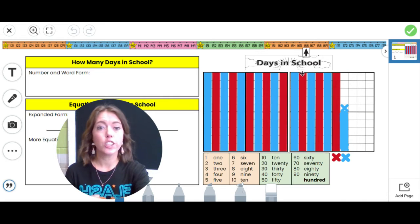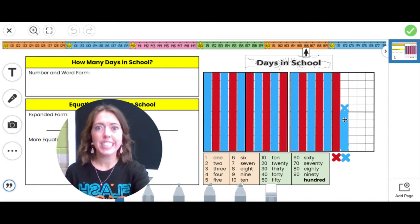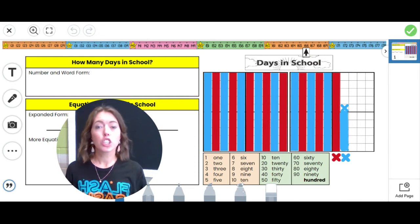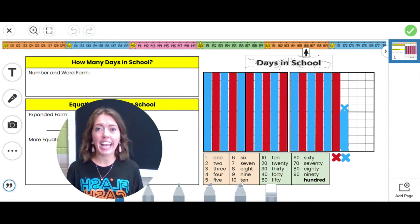110, 120, 130, 140, 150, 160. Then we have five right here. 160 plus five equals 165. And then one more, 166. So far you have been in first grade for 166 days.